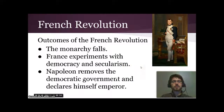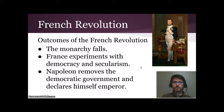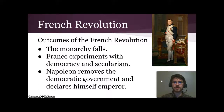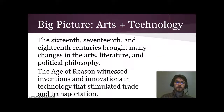Out of the French Revolution, the monarchy fell and was never the same again. France experimented with democracy and secularism, reacting against the clergy's role in keeping the Third Estate down. But that didn't last long. Napoleon eventually removed that democratic government and declared himself emperor — a powerful general who became an emperor where once there were kings.